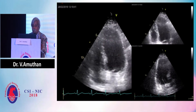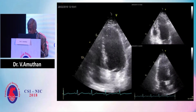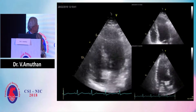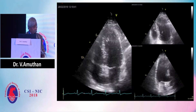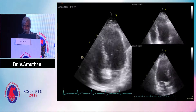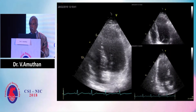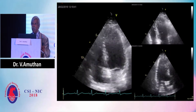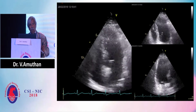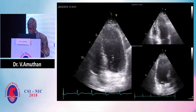You can see the apical four-chamber, two-chamber, and three-chamber views. You hardly recognize any regional wall motion abnormality — this is the main problem. You always correlate with your ECG and assign regional wall motion abnormality. I have observed that most colleagues just look at the ECG and then write the regional wall motion abnormality. It is not the correct approach.